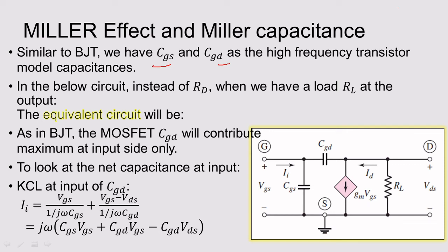In the last lecture we studied the higher frequency model of the MOSFET. We saw which capacitances are mathematically represented at higher frequencies — Cgs, Cgd, Cgsp, and Cgdp. These are overlap capacitors, and the dominant ones are Cgs and Cgd, which limit your gain in the higher frequency region. Cgd is connected between the input port and the output port in this higher frequency transistor model.